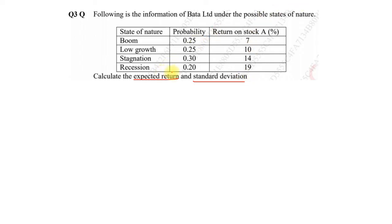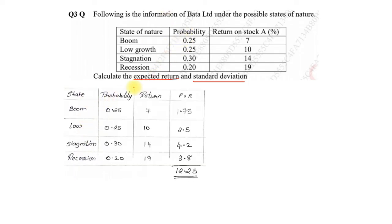First step: always remember we need to find the expected return. So the columns that will be required will be state of nature, probability, and the return which are given. We need one additional column called P into R, that is probability multiplied by the return. So 0.25 into 7 is 1.75, 0.25 into 10 is 2.5, 0.30 into 14 is 4.2, 0.2 into 19 is 3.8. We add up, we get the total value as 12.25, that is nothing but the expected return. So expected return R bar is equal to sigma P into R that came to 12.25 percent.